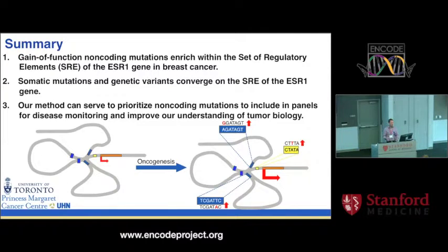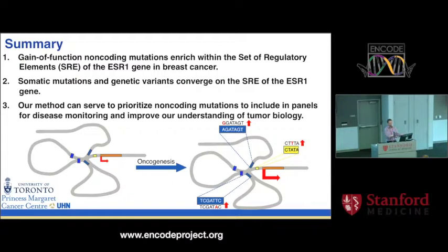Overall, we can identify mutations that populate sets of regulatory elements for particular genes rather than looking for enrichment within a single element. For the ESR1 gene's set of regulatory elements, we find a number of significant mutations that appear to act predominantly as gain-of-function mutations. There's convergence between genetic predispositions and somatic mutations. The methodology can be applied to any cancer type of interest to identify regulatory regions warranting greater attention. If designing a panel to monitor mutations in the blood, I would prioritize DHS sites that are part of significantly mutated sets of regulatory elements.